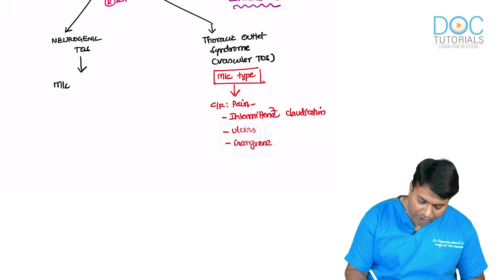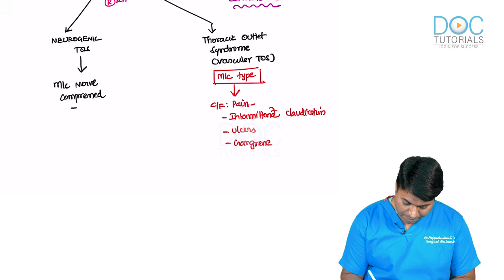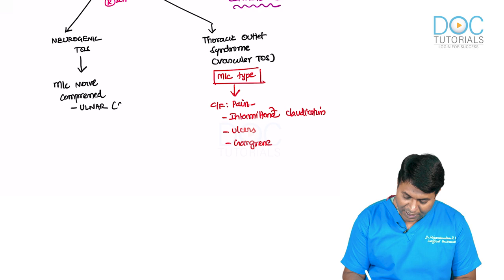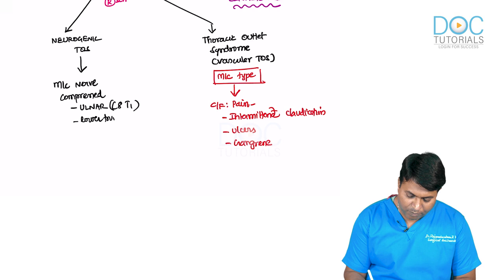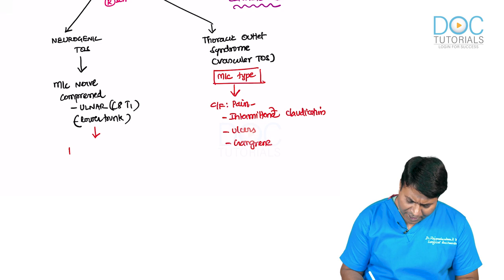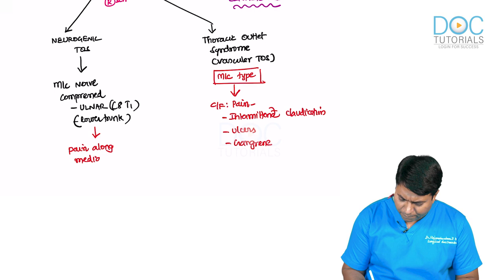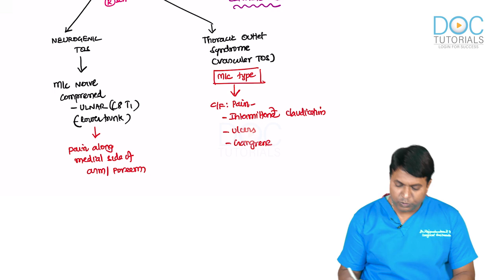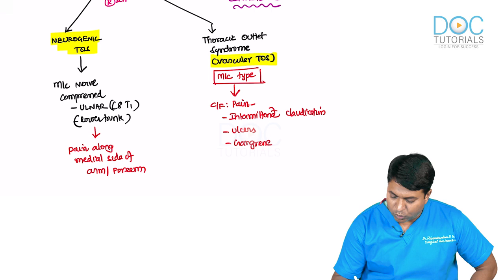In neurogenic thoracic outlet syndrome, the most common nerve compressed is the ulnar nerve — C8 and T1 — meaning the lower trunk of the brachial plexus is commonly compressed. The classical feature is pain along the medial side of the arm and forearm, in the ulnar nerve distribution.